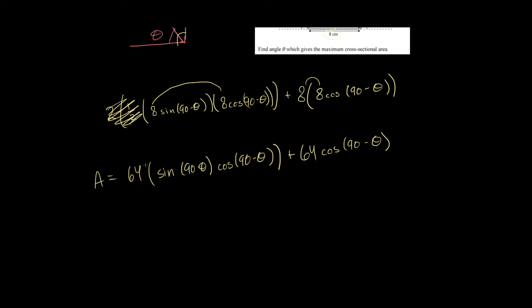When we're trying to maximize area, we always want to use the derivative. To take the derivative, the first thing you have to do is identify that this is going to be a product rule, because we have sine times cosine.